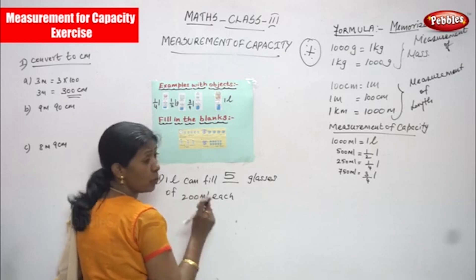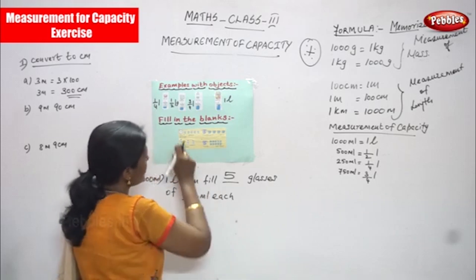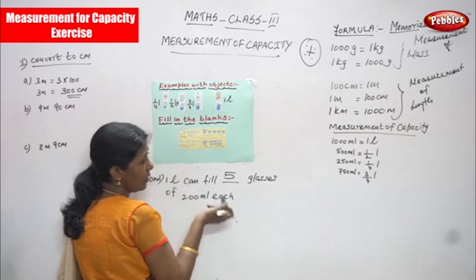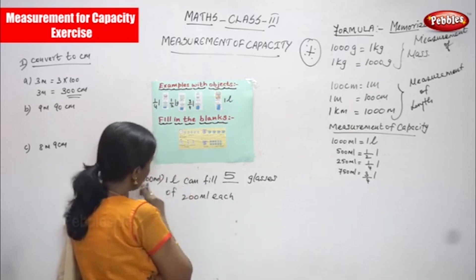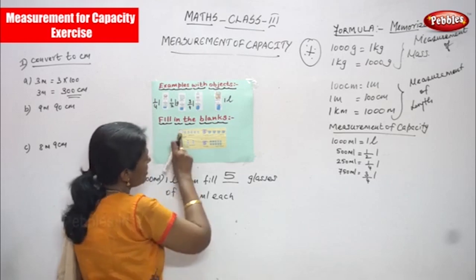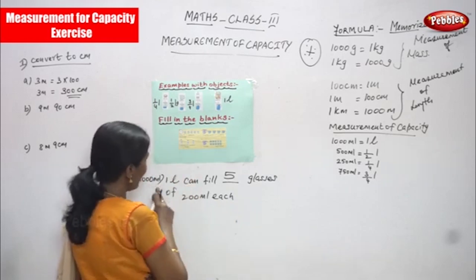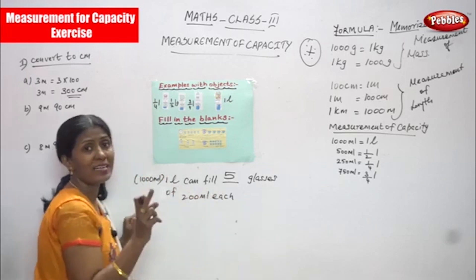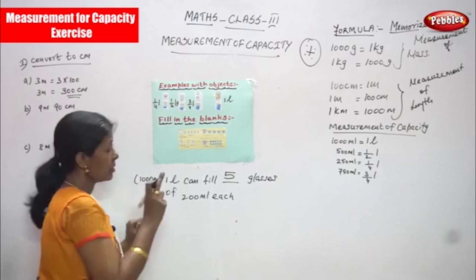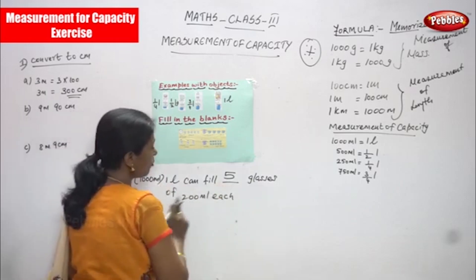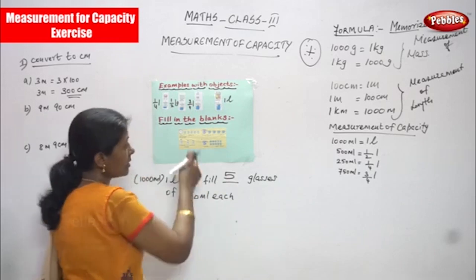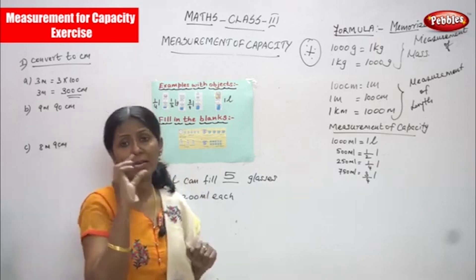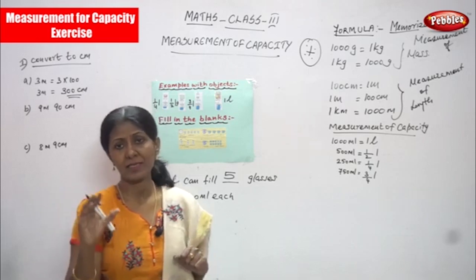That means each glass has 200 ml of milk. Thousand ml is nothing but thousand milliliter. Thousand milliliter you can call it as one liter. Thousand ml is equal to one liter. So one liter can fill five glasses of 200 ml each. That is the meaning — each 200 ml of milk in the five glasses, that is the exact meaning.